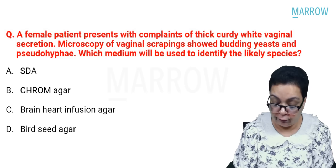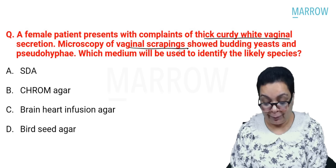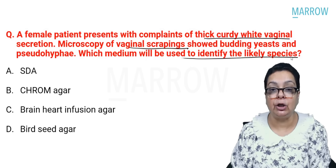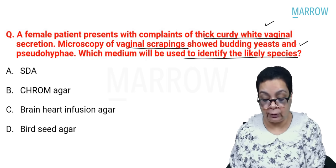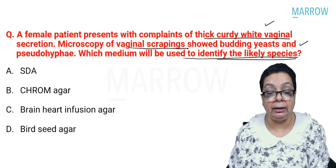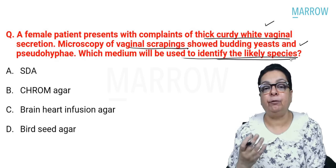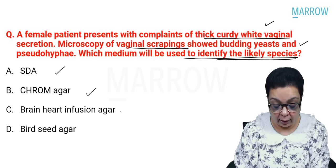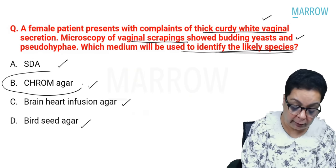A female patient presents with thick curdy vaginal secretions. Microscopy showed budding yeast and pseudohyphae — which medium will be used to identify the likely species? Curdy white vaginal discharge indicates candidiasis. The question asks which is the differential medium for identifying candida species. The answer is option B, chrome agar.